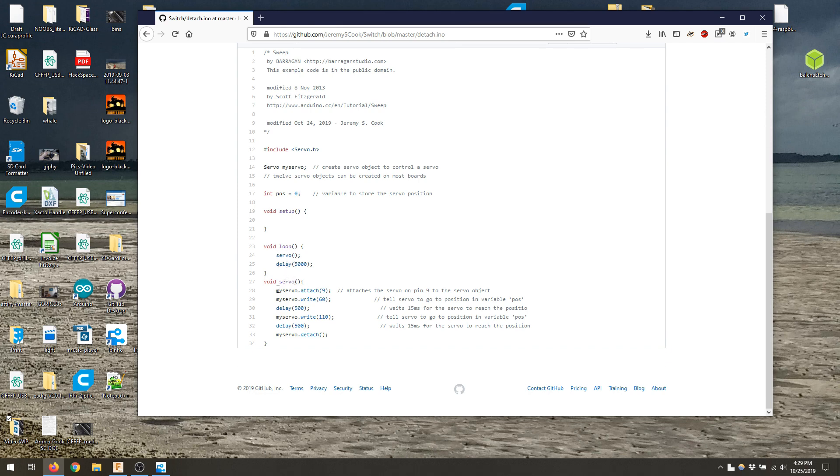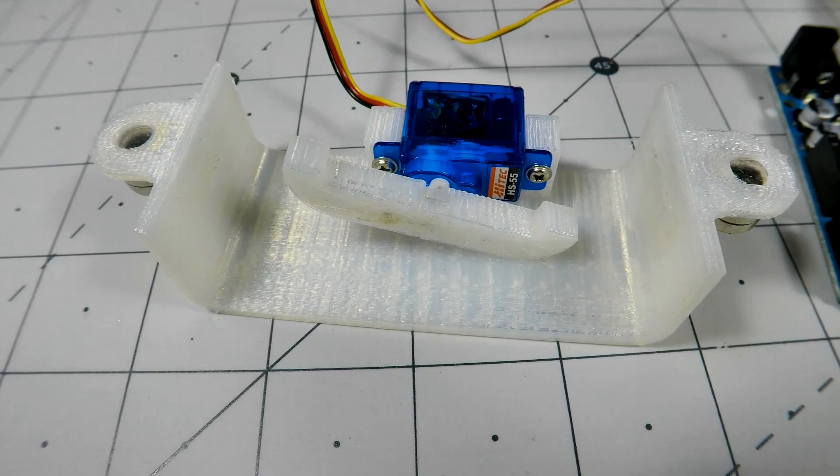Generally, you attach the servos in the setup routine at the beginning of your code. But here, I'm attaching it in a function toward the bottom, the void servo function. You can name it anything you want, but that's how I'm doing it. You just attach it in the function, do your routine, and then detach it. I found this doesn't seem to work in the loop itself, so I think that's kind of the trick.